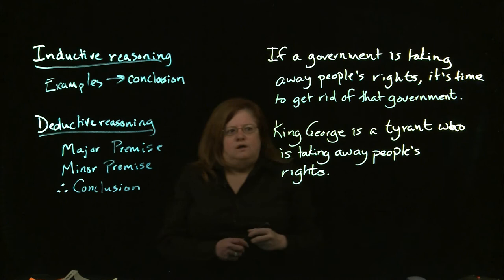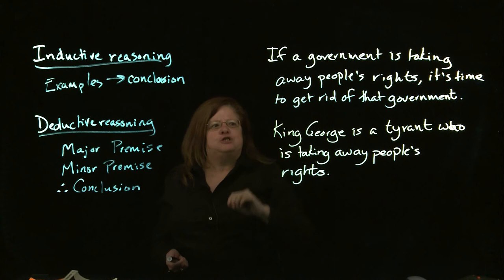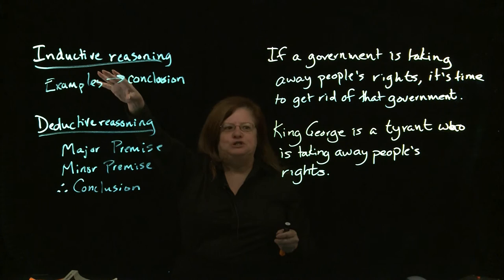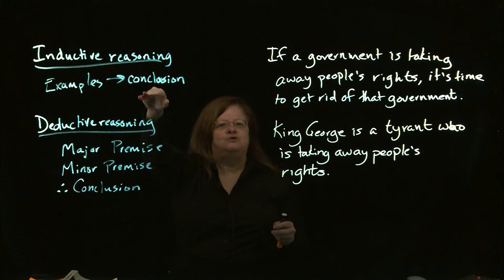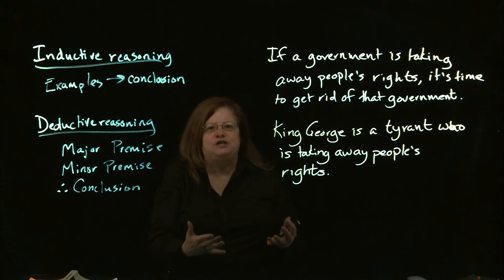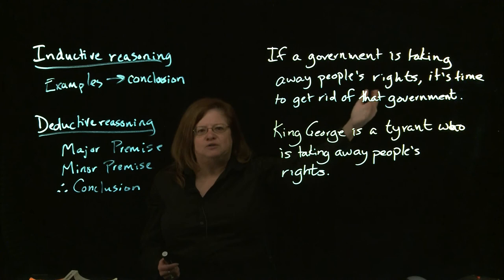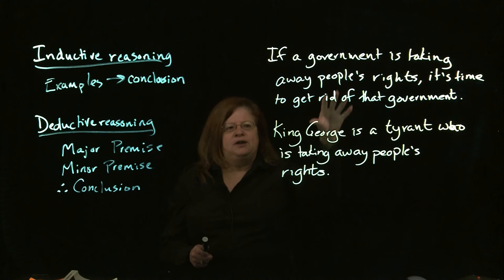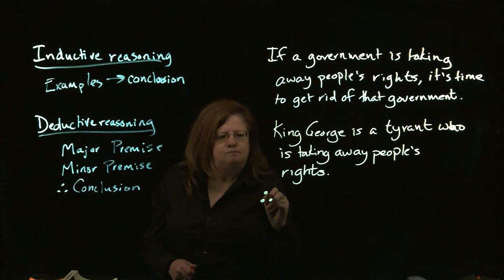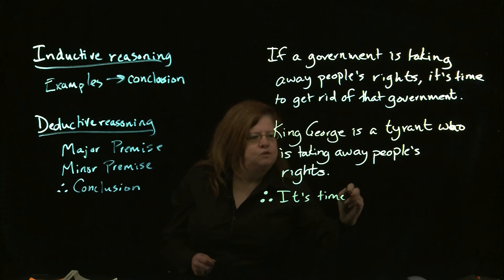You may notice something about how these two statements work together. Jefferson has done something pretty clever. The minor premise is something you get to after you've done the inductive reasoning — he takes the conclusion from the inductive reasoning and it actually becomes the minor premise for the deductive reasoning. So we have the major premise: if a government is taking away people's rights, it's time to get rid of that government. Then we have the minor premise, our specific situation: King George is a tyrant who is taking away people's rights. And so if we add these two premises together, we get — therefore — it's time to get rid of King George.